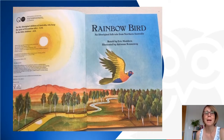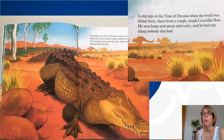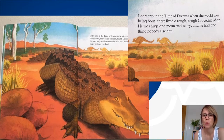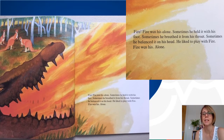The Rainbow Bird — an Aboriginal folk tale from northern Australia, retold by Eric Madden and illustrated by Adrian Kennaway. Long ago, in the time of dreams, when the world was being born, there lived a rough, tough crocodile man. He was huge and mean and scary, and he had one thing nobody else had. Fire. Fire was his alone. Sometimes he held it in his foot, sometimes he breathed it from his throat, sometimes he balanced it on his head. He liked to play with fire. Fire was his alone.